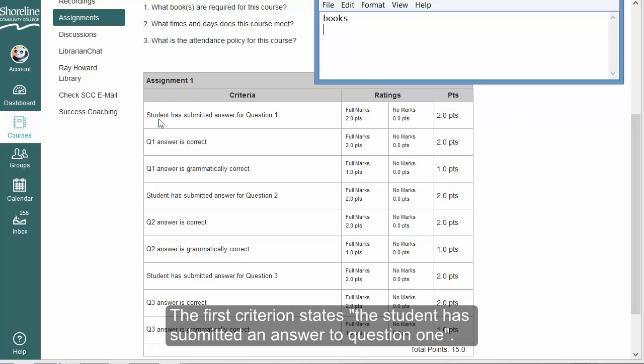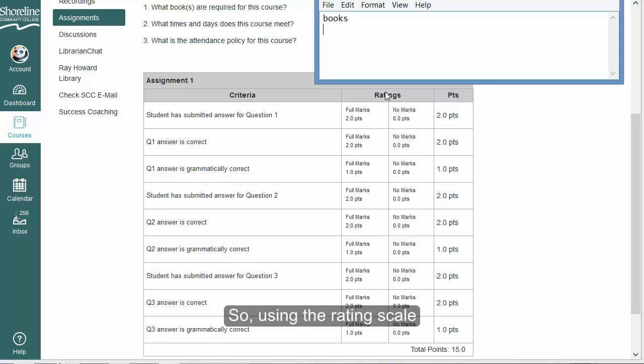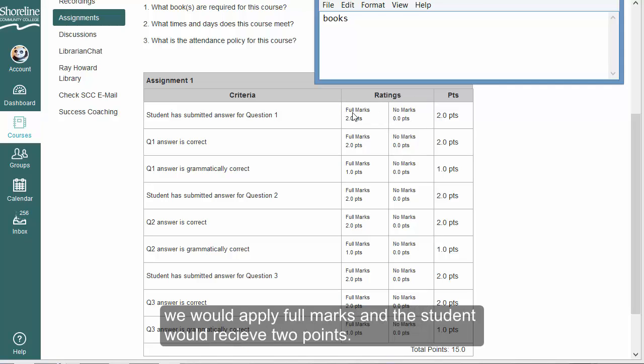The first criterion states that the student has submitted an answer for question one. That is true, although books is not a good answer. So, using the rating scale, we would apply full marks and the student would receive two points.